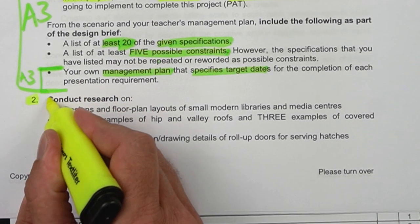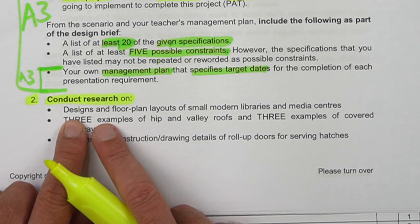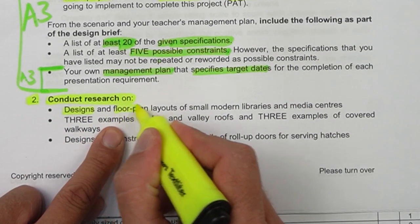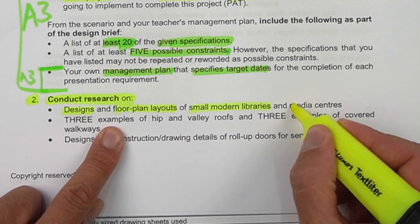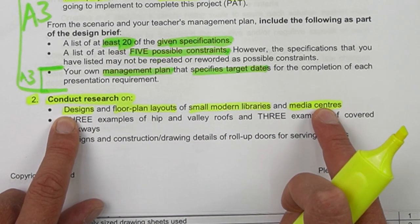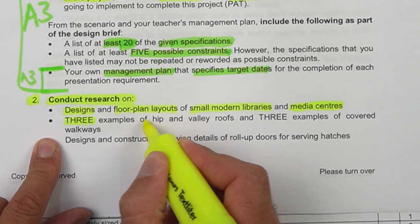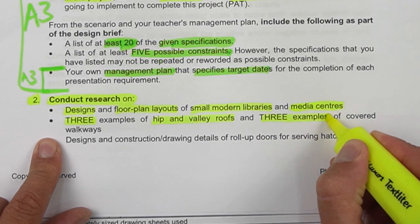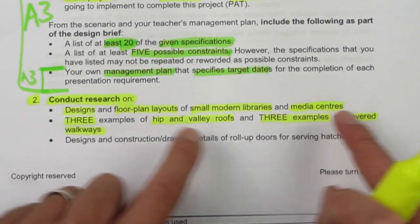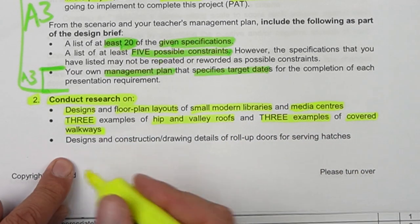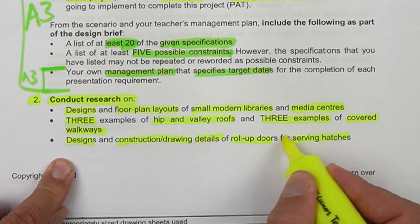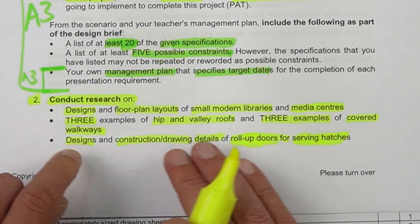Looking at number two, the research part of your PET, they say you have to do research on the designs and floor plan layouts of a small modern library and media center — so there are two components: the library part and the media center part. The second requirement asks for three examples of hip and valley roofs and three examples of covered walkways. The last part is the designs and construction drawing details of roll-up doors for serving hatches — not garage doors, but for serving hatches.